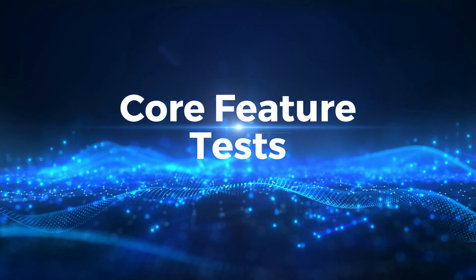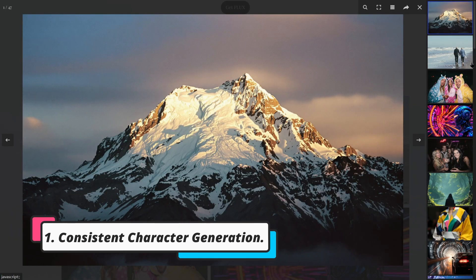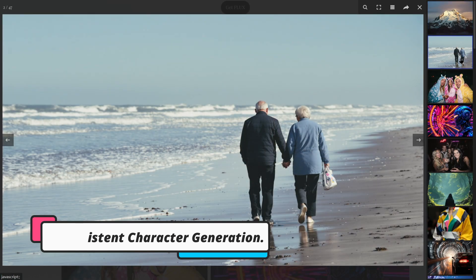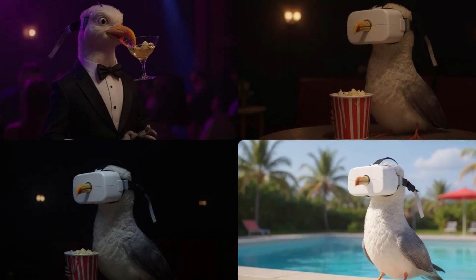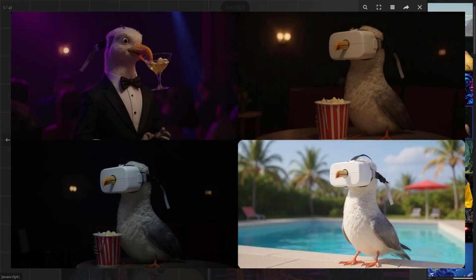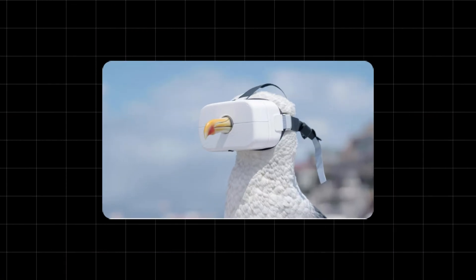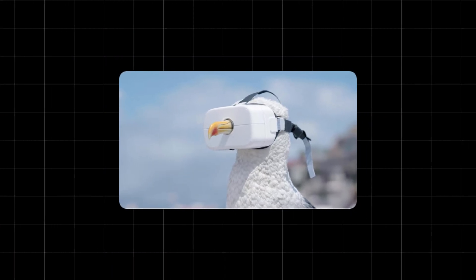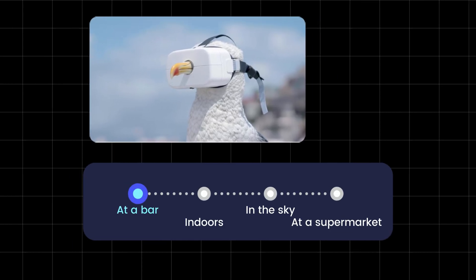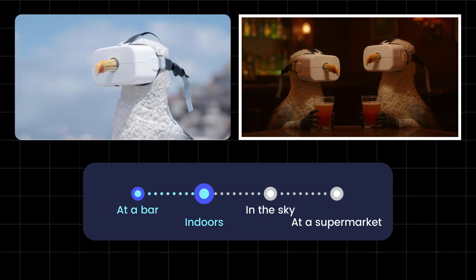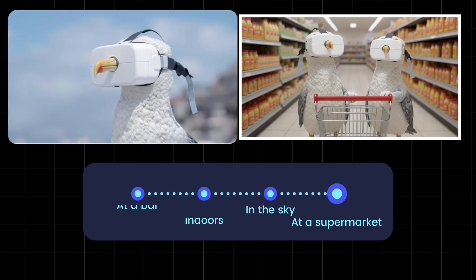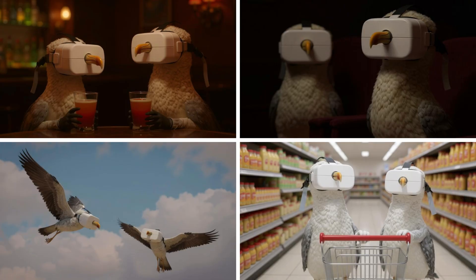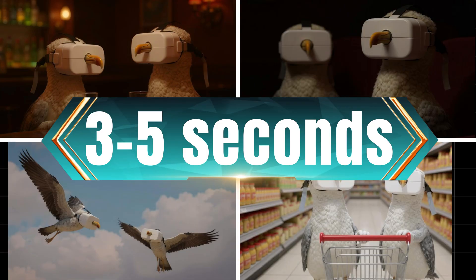Core Feature Tests. First: Consistent Character Generation. One of the biggest challenges with AI image models today is maintaining character consistency, especially when generating scenes for the same character in different settings. We uploaded a photo of a bird wearing a headpiece and asked Flux.1 Context to generate four different versions — at a bar, indoors, in the sky, and at a supermarket. The results were super realistic and fast, each image generated in just three to five seconds.